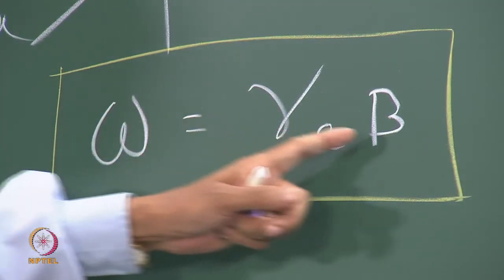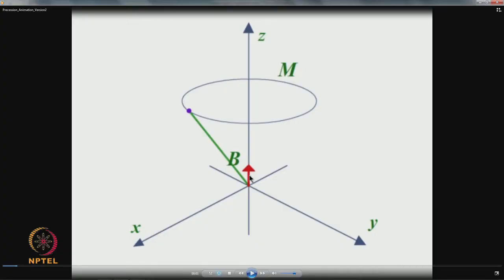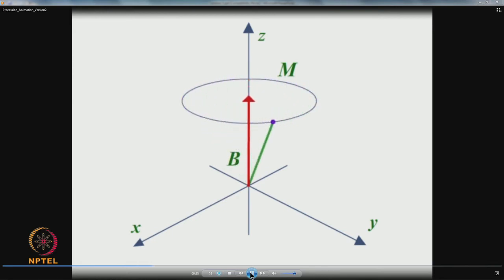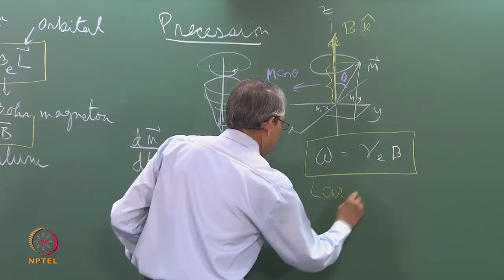This shows that the frequency of precession is proportional to the magnetic field. To illustrate this, there is a small animation here: B is the magnetic field and the green arrow is the magnetic moment vector. As the magnetic field (red vector) increases, the frequency of precession increases gradually. When B is very high it precesses very fast, and when we reduce the magnetic field the precession slows down again. This frequency of precession is called the Larmor frequency.